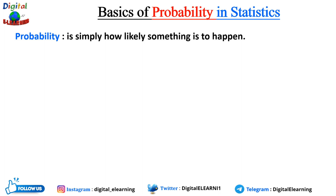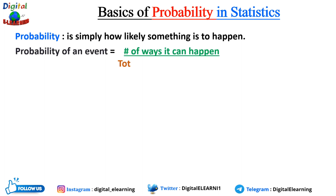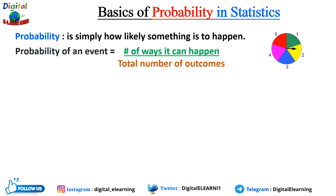We define the probability of an event as the number of ways it can happen divided by the total number of outcomes. In other words, it is the ratio of the number of favorable outcomes divided by the total number of possible outcomes.